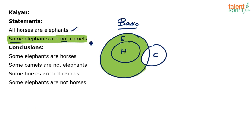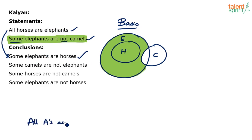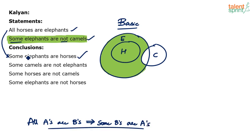It is a 'some not' type of statement. The basic diagram is done: all horses are elephants; some elephants are not camels. Now let's look at the conclusions. Conclusion 1: some elephants are horses. This is a definite conclusion — we don't even need to look at the diagram. For all A's are B's, the definite conclusion is some B's are A's. So all horses are elephants definitely means some elephants are horses. First conclusion definitely follows.